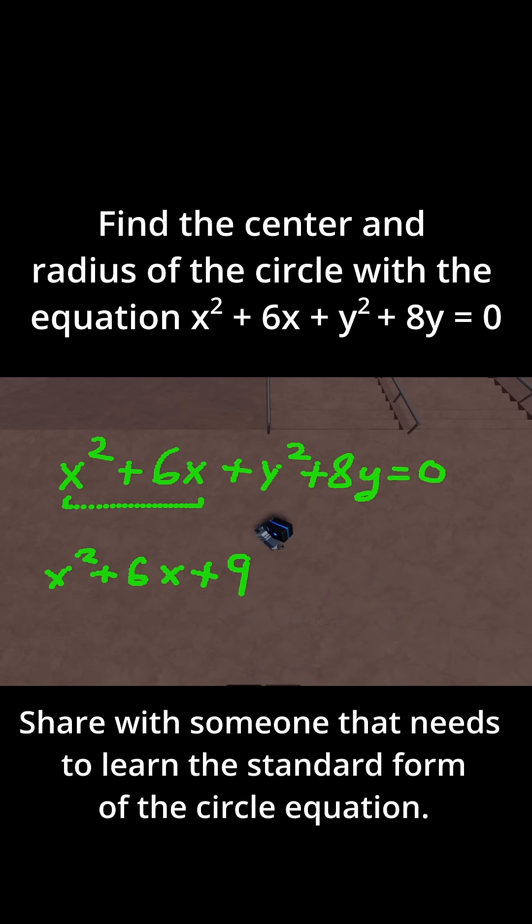But notice how we just changed one side of the equation. I've added 9 to this side of the equation here. I have to add 9 to this side of the equation to be consistent as well. So I'm just going to add 0 and I'm going to write plus 9 because we need to add a 9 to that side.